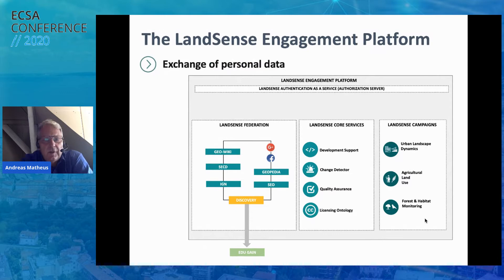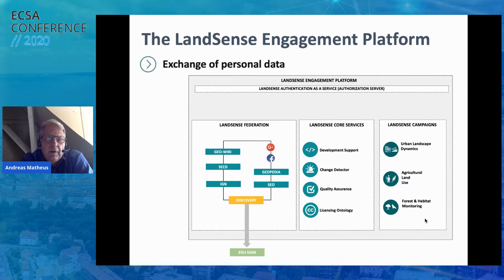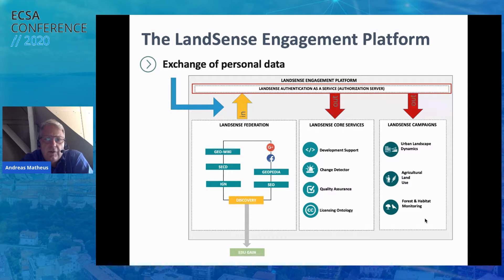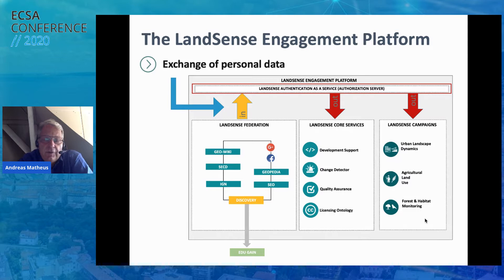On this figure, you can see the components of what Landsense has built — the engagement platform. There are different categories: the Landsense Federation, core services, and campaigns with applications. Most important is the Landsense Authentication as a Service. This authorization server controls the flow of personal information coming in from login entities in the Landsense Federation, and the personal information is then filtered and processed according to GDPR, and forwarded to services and applications in the amount necessary.